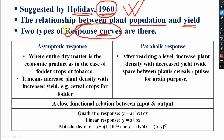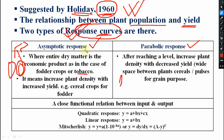Two types of response curves are there. One is the asymptotic response curve, and another one is the parabolic response curve. The asymptotic response curve is when the entire dry matter is the economic product, as in the case of fodder crops or tobacco. The whole plant itself is the yield. This means an increase in plant density leads to increased yield — that is the asymptotic response, as seen in cereal crops grown for fodder.